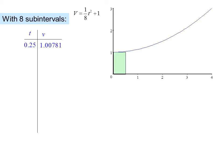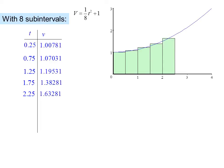With 8 subintervals, we'd have midpoints in the middle of smaller rectangles. So at 0.25, we get a height of 1.00781, and we continue filling out our table and drawing our rectangles.